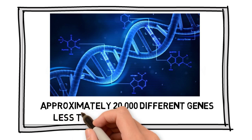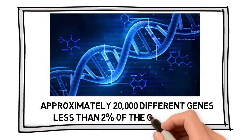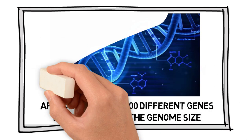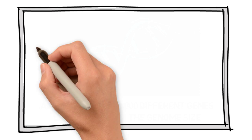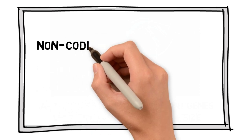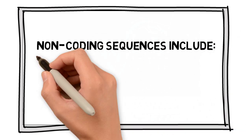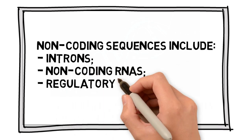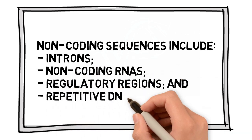This corresponds to less than 2% of the genome size. The rest of the genetic material is said to be non-coding. Non-coding sequences include introns, non-coding RNAs, regulatory regions, and repetitive DNA.